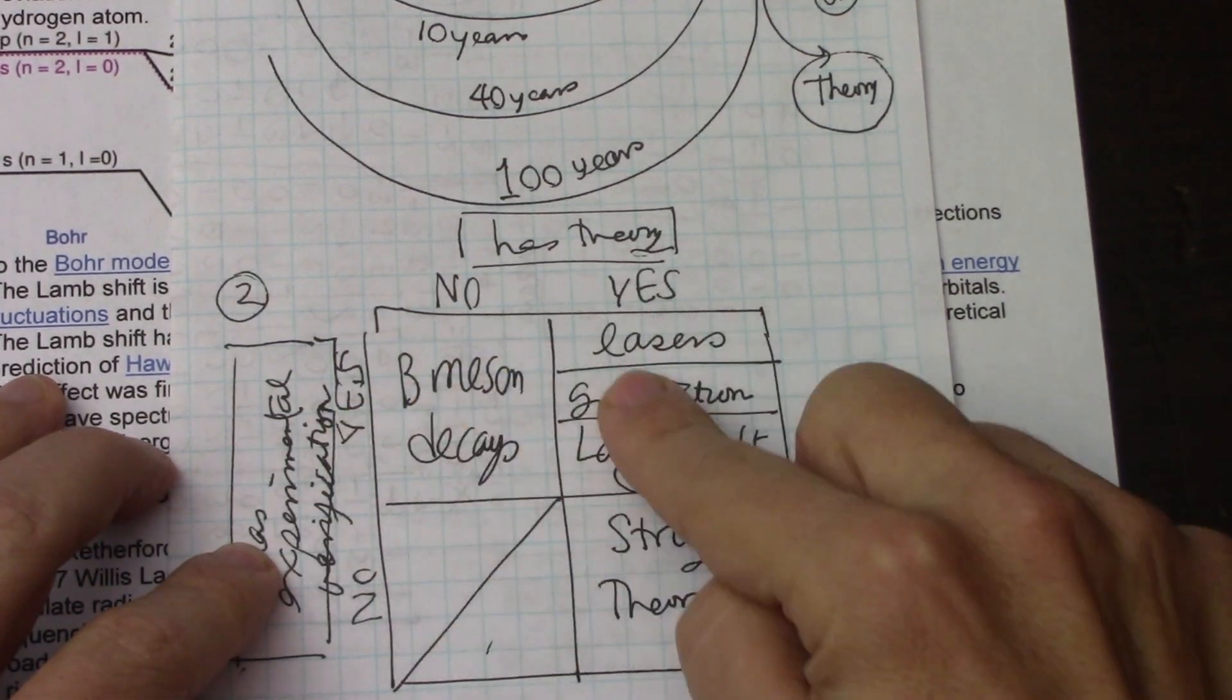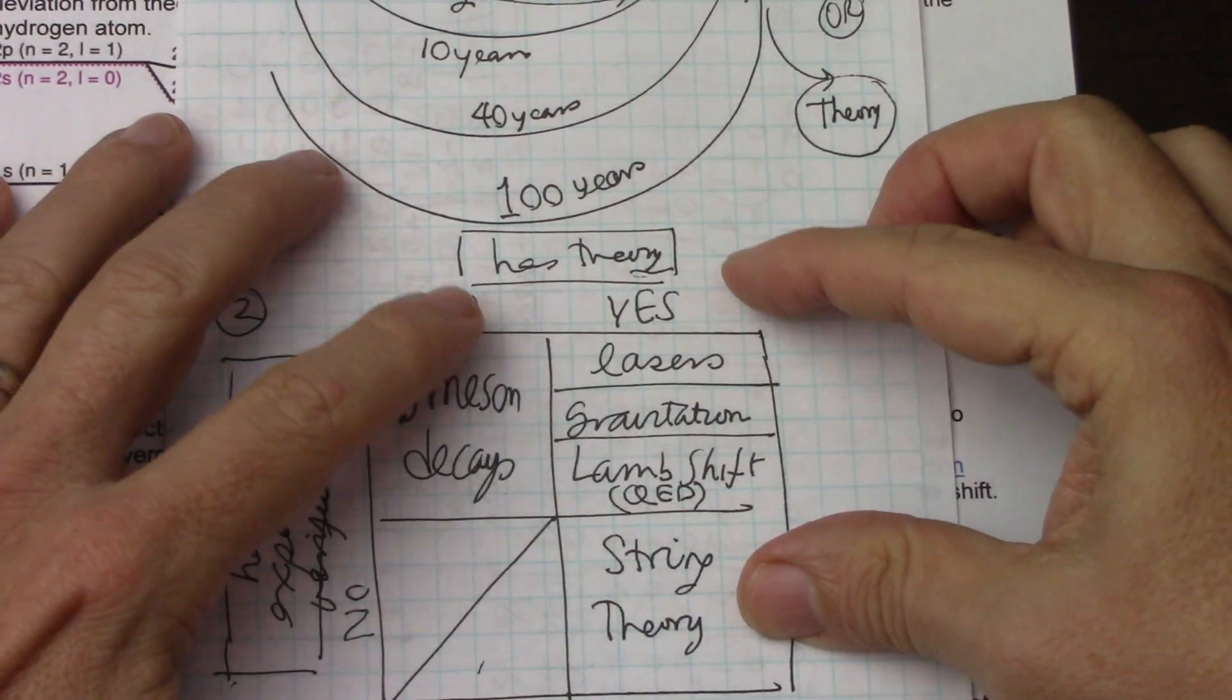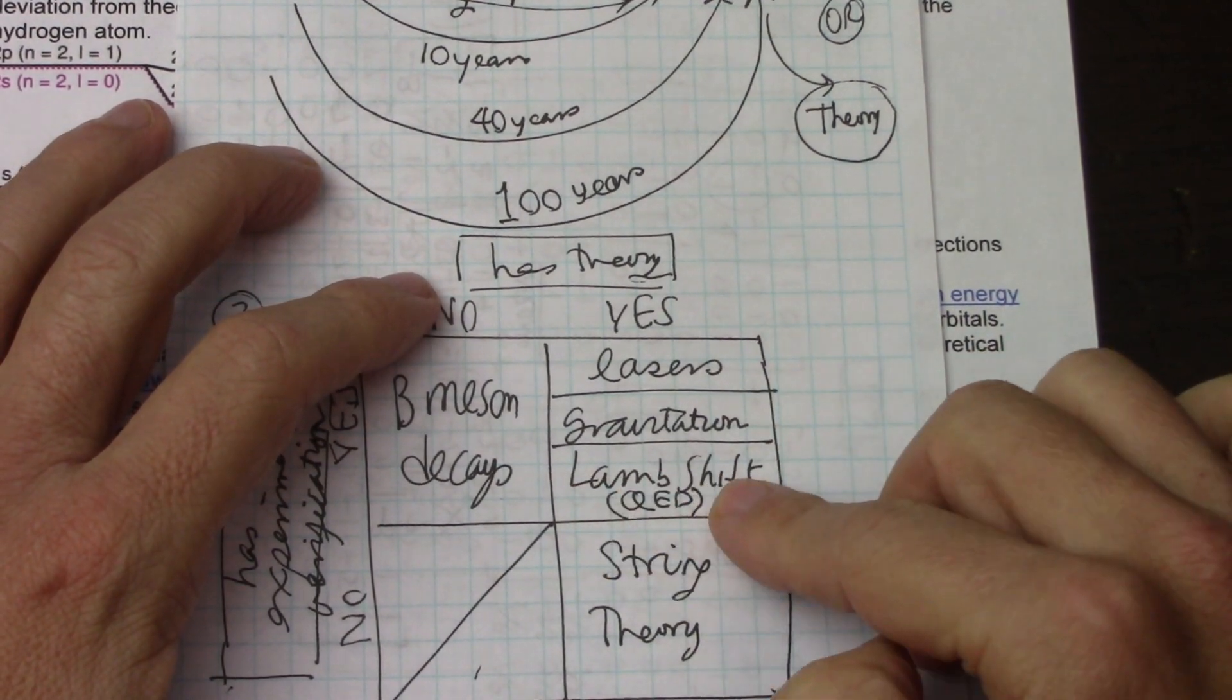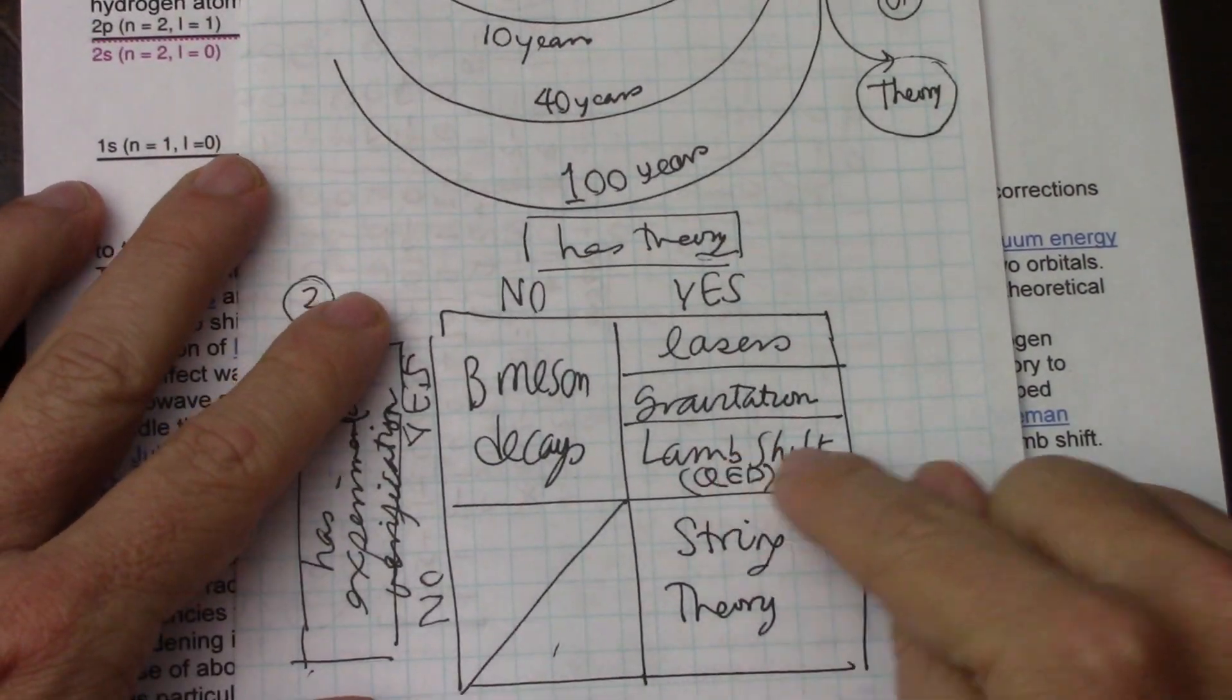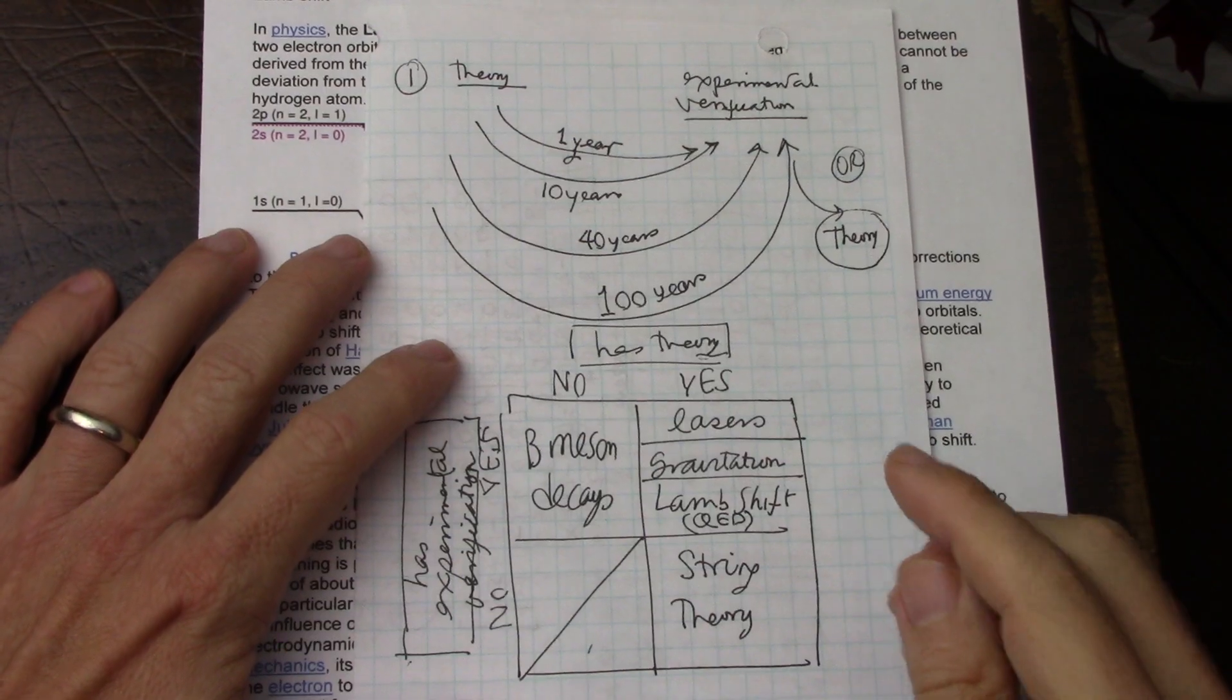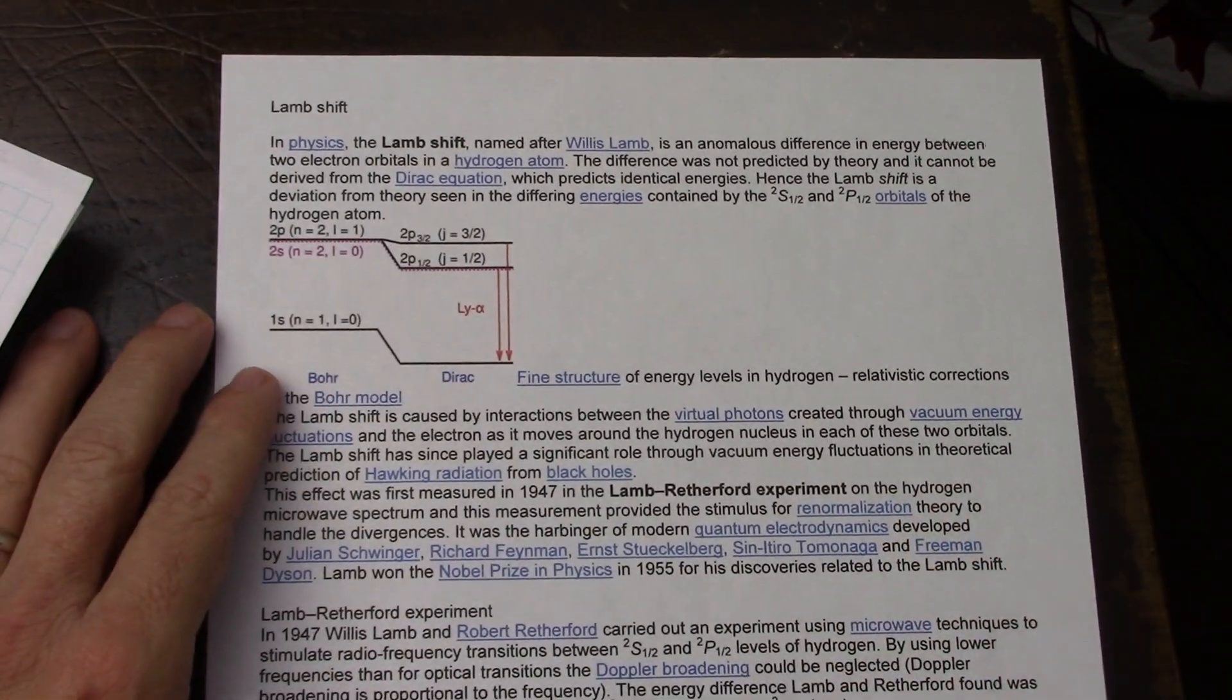Then the yes, yes are the ones that are kind of happy, right? So in the yes, yes, you have like lasers, gravitation, the Lamb shift, which is one of my props. So in the case of the Lamb shift, it's a very interesting case. The Lamb shift was measured, and this is out of Wikipedia.